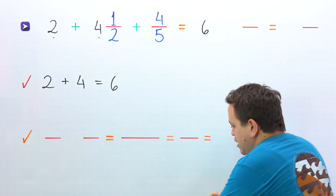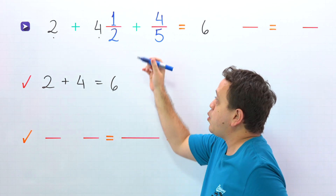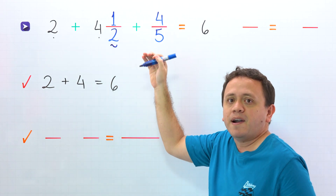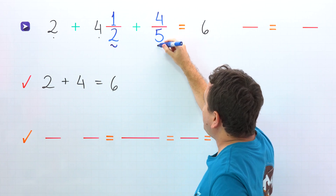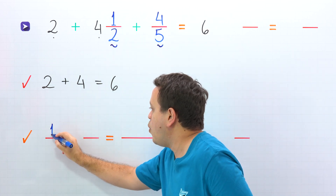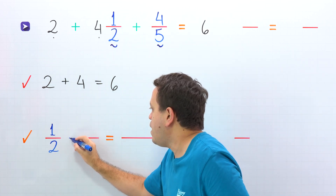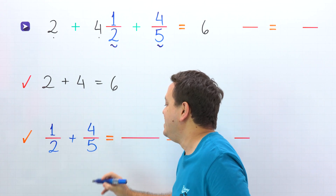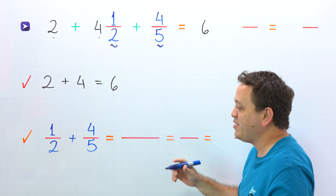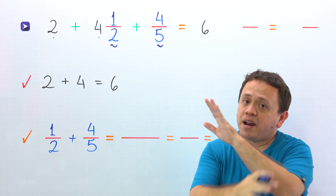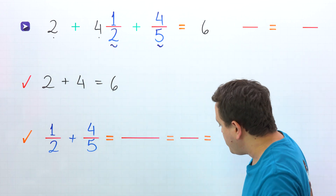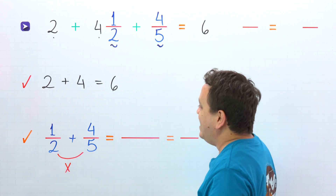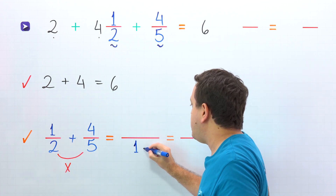It's time to add the fractions. In this problem, the fractions are 1 half — that is correct, 1 half is the fractional part of our mixed number — and also 4 fifths. Come over here: 1 half plus 4 fifths. As you can see, these two fractions have different denominators. So once again, we're going to use the butterfly method. In this method, we start by multiplying the denominators, and 2 times 5 is 10.